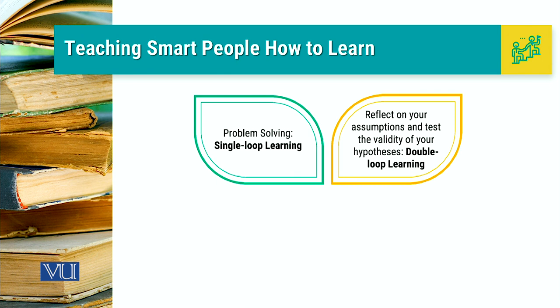In double loop learning, the people are there to validate the assumptions. The people are there to validate the procedures and processes to solve a problem. We can challenge those assumptions.